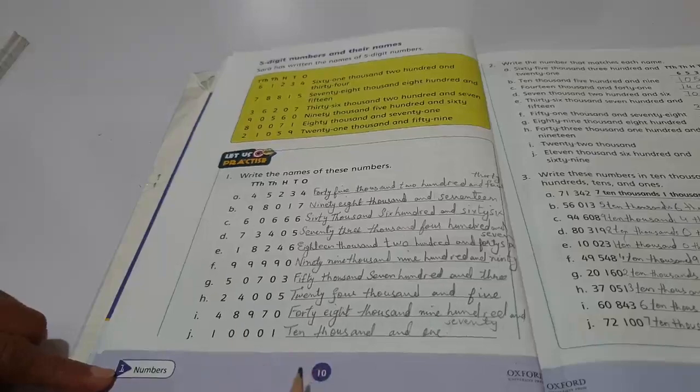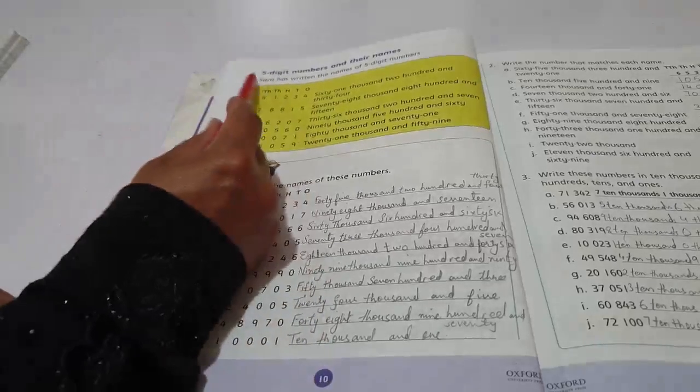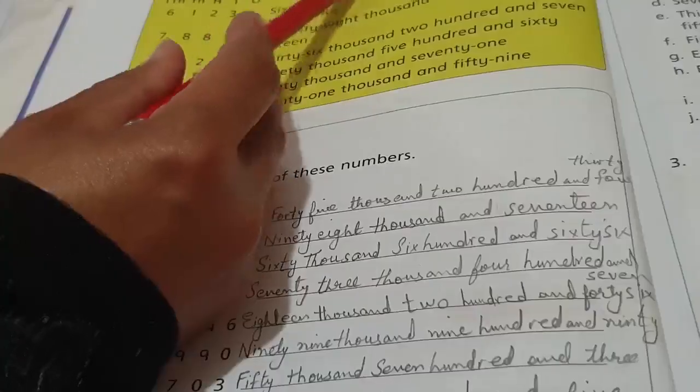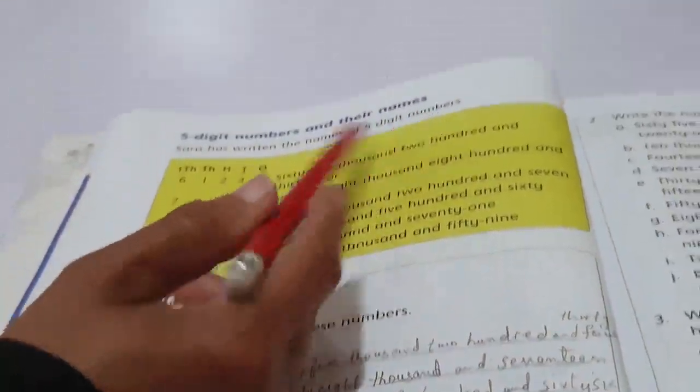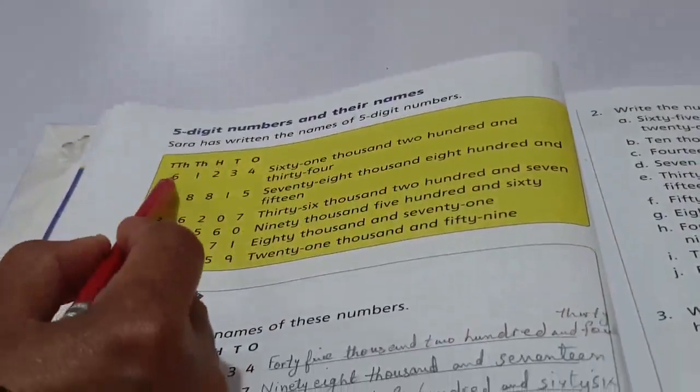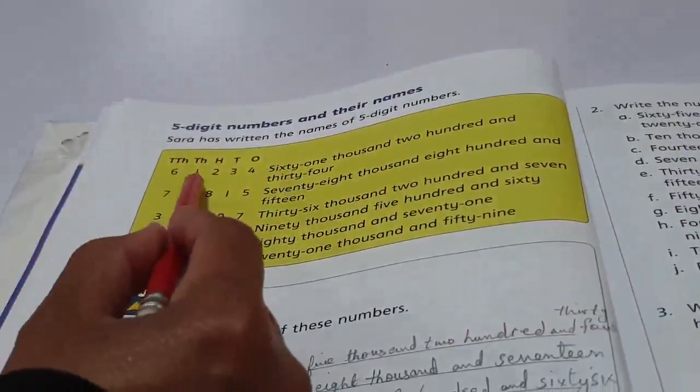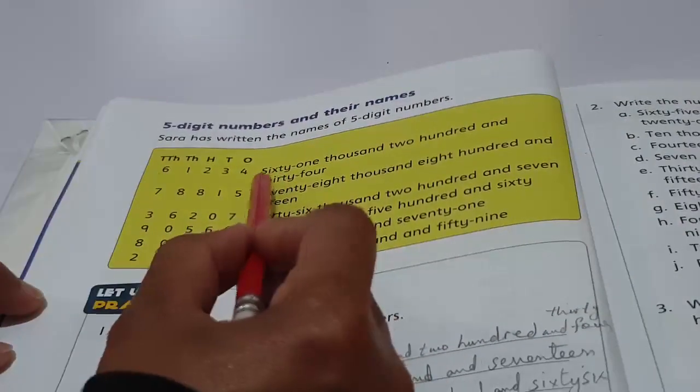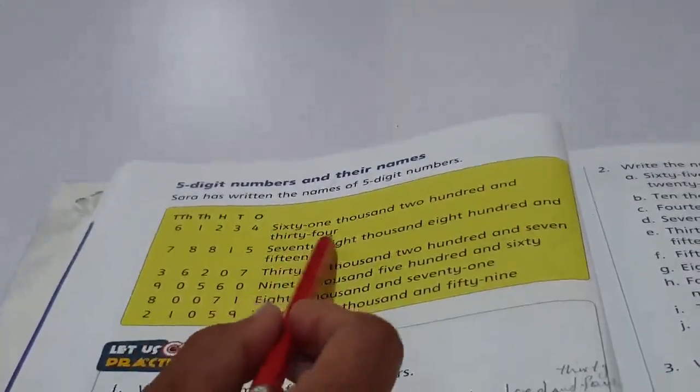We can also count in thousands: flowers in a field, trees in jungle, leaves on a tree, books in a library. Now move on to the next page, page number 10. There are five digit numbers and their names. Sarah has written the names of five digit numbers.